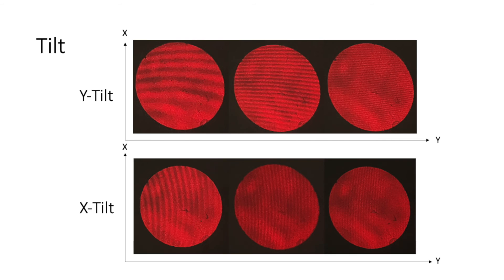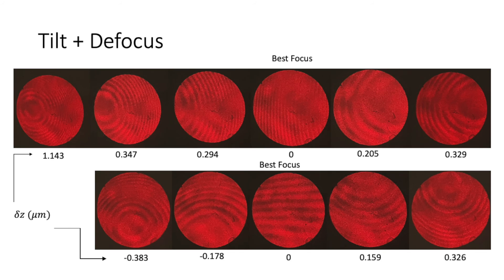As I added more tilt, the number of fringes increased and the fringe spacing decreased, while the fringes are nearly straight lines and parallel to their corresponding axis. Here I show the effects of adding defocus to the mirror with both x- and y-tilt. With x-tilt, the circular fringe pattern due to defocus is shifted horizontally, but with y-tilt, this circular pattern is shifted vertically.